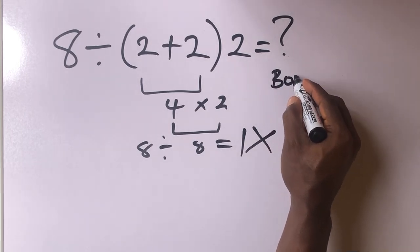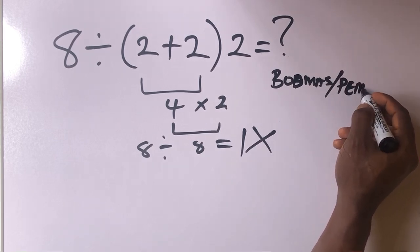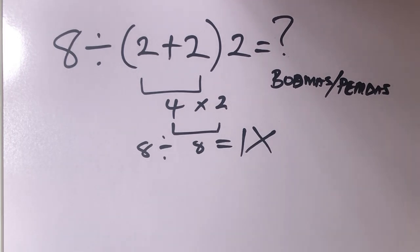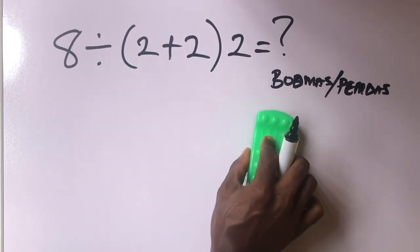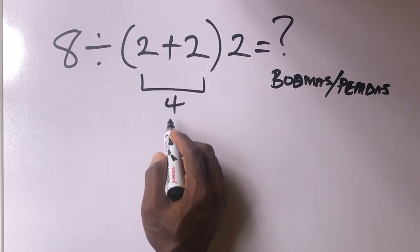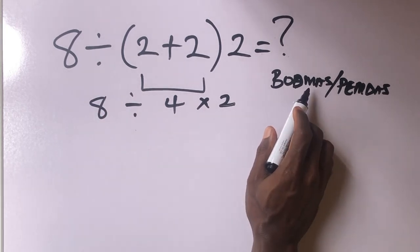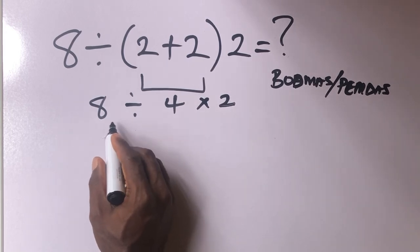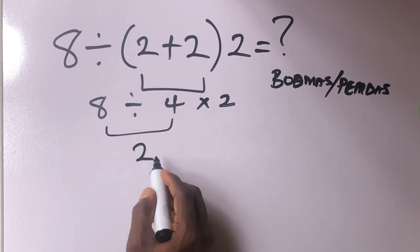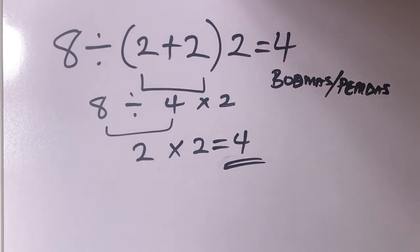According to BODMAS, let's solve it correctly. First of all, we solve what is inside the bracket: 2 plus 2 gives us 4. Remember there's a multiplication — times 2 — but division comes before multiplication, so 8 divided by 4 gives us 2. Then 2 times 2 is equal to 4. So our final answer is 4.